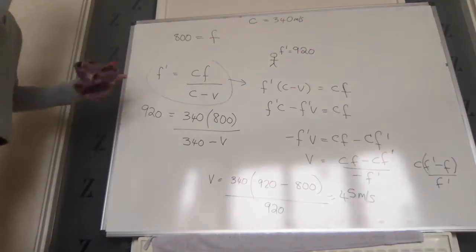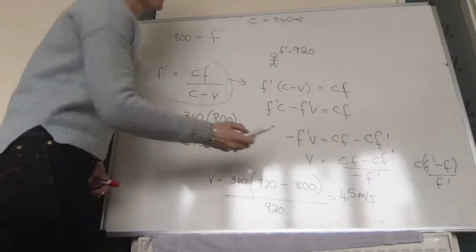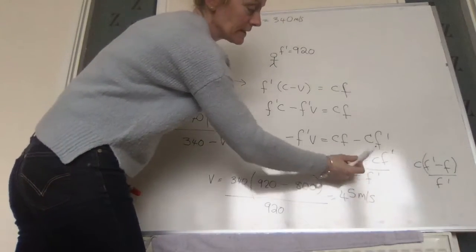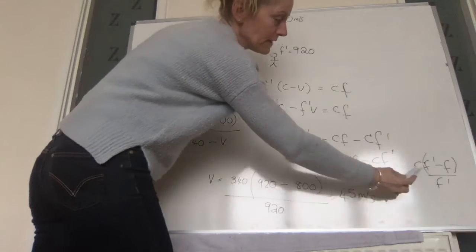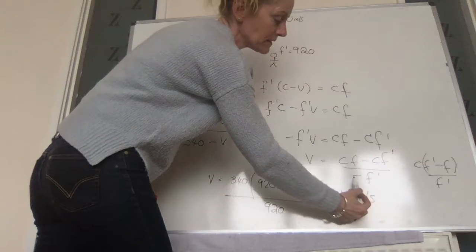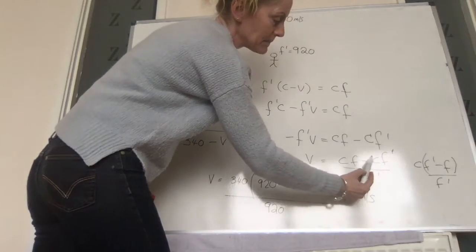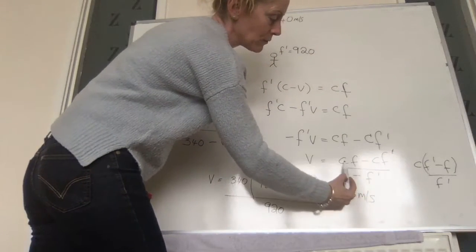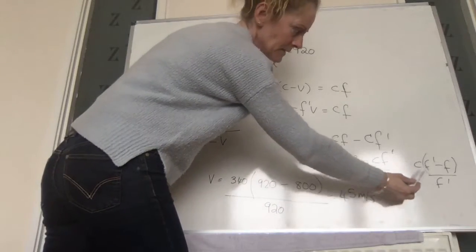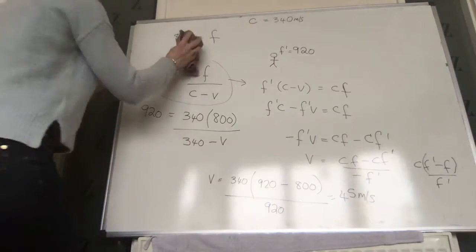The hardest part of that question is really rearranging the formula. What I did between the steps was multiply the top and bottom by minus 1, which turned the subtraction around, and then factored out the C. Moving on to the next question.